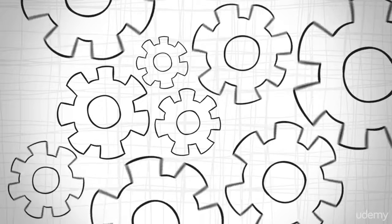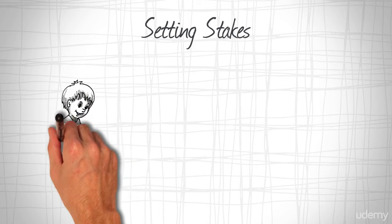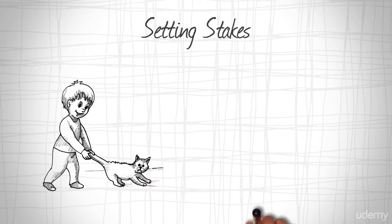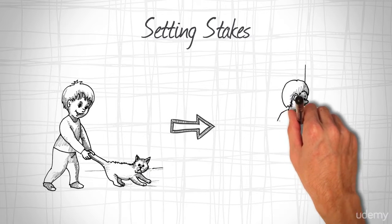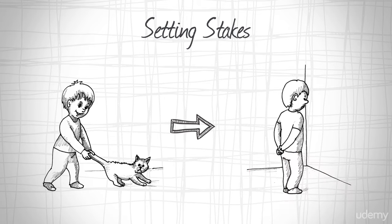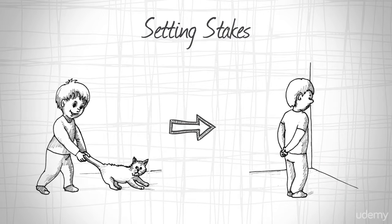The first strategy is to hold yourself accountable by setting stakes. Setting stakes is one of the most powerful ways to keep yourself disciplined. After all, if there's no punishment when you give in, except for self-guilt, it's more tempting to succumb to a craving than if you know you are going to suffer unpleasant consequences.